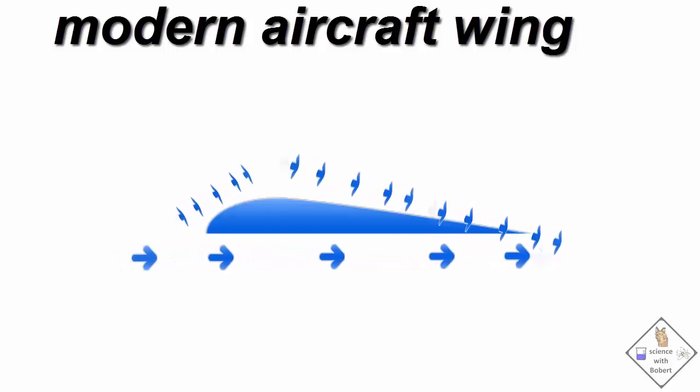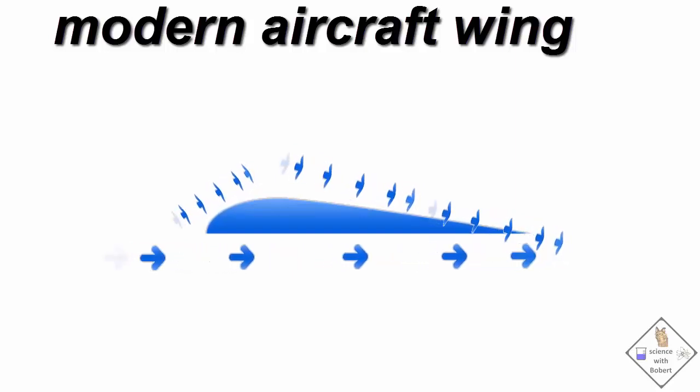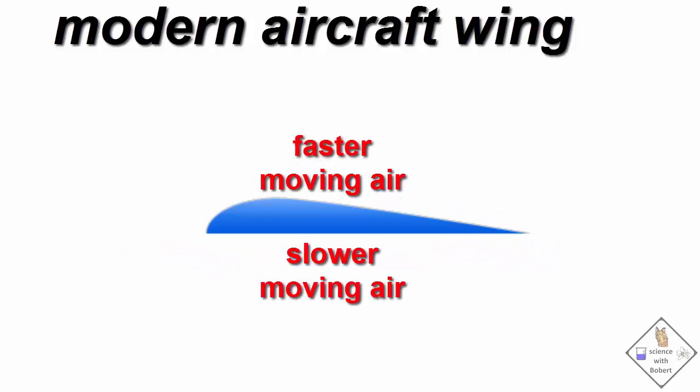Since the wing is curved on top, the air on the top of the wing has a further distance to travel than the air on the bottom of the wing. Since the air on top of the wing has farther to go, it travels faster. Faster moving air generates lower pressure.